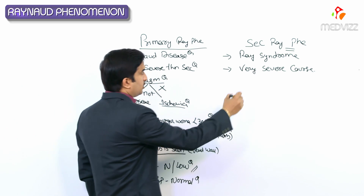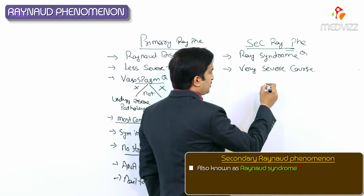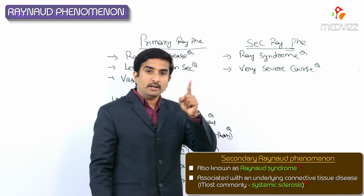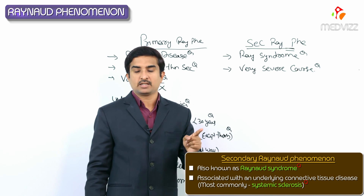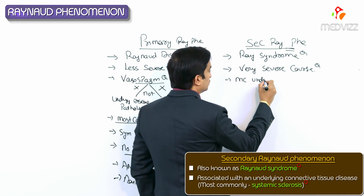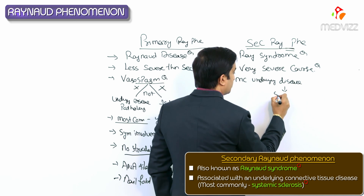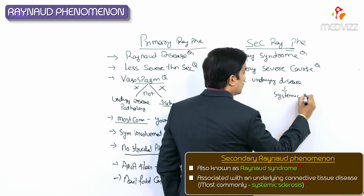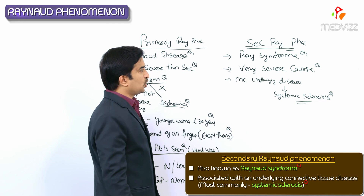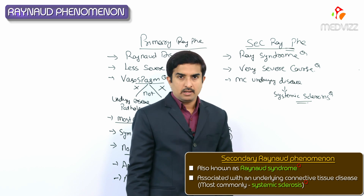Secondary Raynaud's phenomena is also called Raynaud's syndrome and presents with a very severe course of the disease. It is associated with an underlying disease, usually a connective tissue disease — and systemic sclerosis is the most common underlying cause. MCQ point: the most common underlying pathology associated with Raynaud's syndrome is systemic sclerosis.